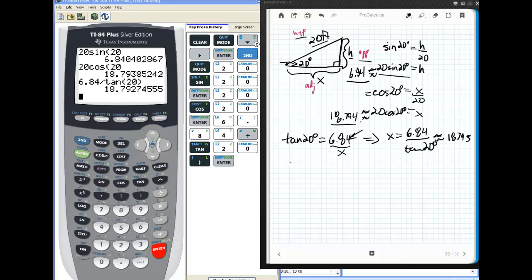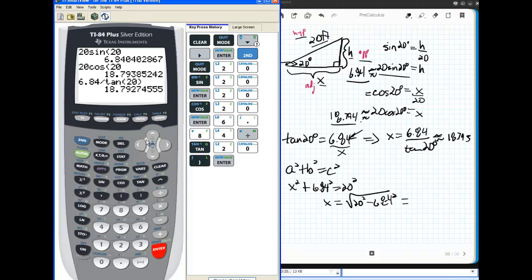Another way that I could have done it, and I promise this is the last way. Another way that I could have done it is I could have said, okay, I know that a squared plus b squared equals c squared per Pythagoras. And, I was solving for x. So, that's going to be x squared plus 6.84 squared equals 20 squared. So, x equals the square root of 20 squared minus 6.84 squared. And, let's see what that is. So, I stumble back over here.